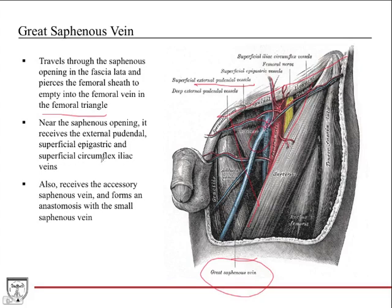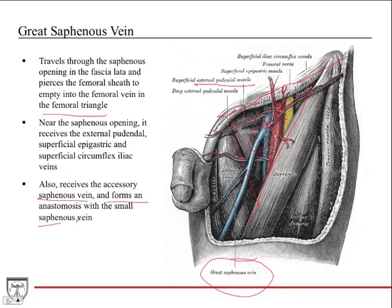The great saphenous vein also receives the superficial epigastric veins and the superficial circumflex iliac veins near the femoral triangle. Importantly, veins are highly variable: arteries are fairly consistent, nerves are most consistent, but veins can drain in unexpected patterns. These tributaries may drain directly into the femoral vein rather than the great saphenous. The great saphenous can also receive the accessory saphenous vein and forms an anastomosis with the small saphenous vein.